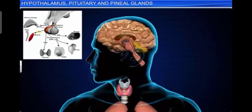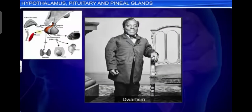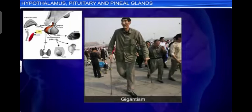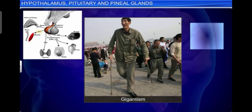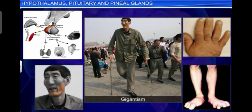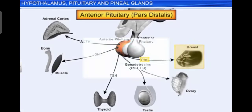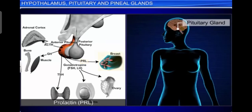Hyposecretion of growth hormone results in stunted growth, leading to pituitary dwarfism. Oversecretion of growth hormone stimulates abnormal growth of the body, leading to gigantism. Excess secretion of growth hormone in adults, especially in middle age, can result in severe disfigurement especially of the face, called acromegaly, which may lead to serious complications and premature death if unchecked. The disease is hard to diagnose in the early stage.